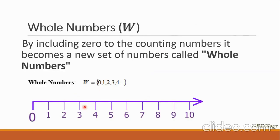The next group is what we call whole numbers, denoted by capital W. This time we're going to include 0 plus the counting numbers, and it is called whole numbers. So the set W is equal to, starting from 0, 1, 2, 3, 4, so on and so forth, as shown in our number line below.